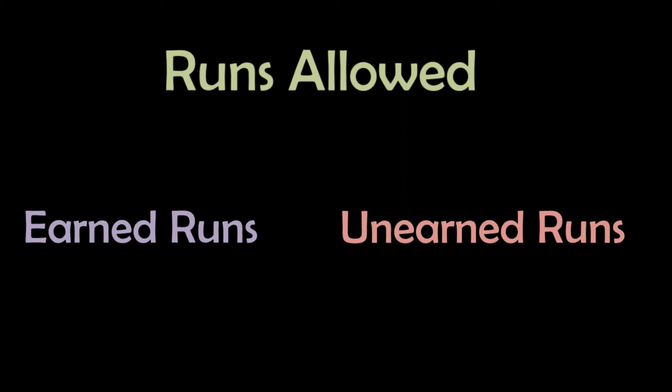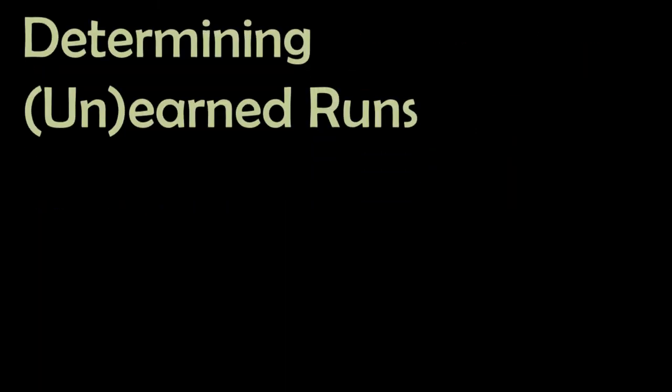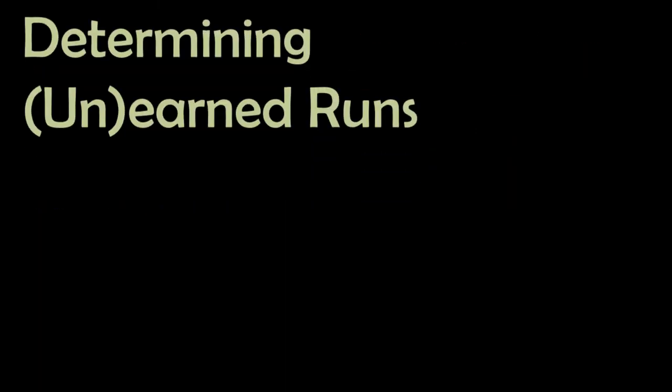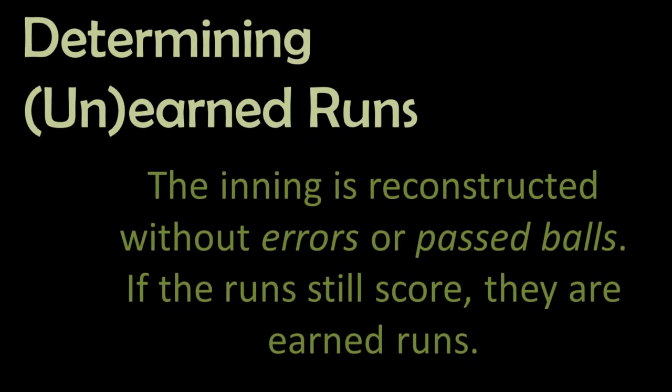If we have an inning in which there are no errors or passed balls, all runs scored in that inning are earned. If there are runs scored in an inning where there was an error or passed ball, however, things get a little bit more complicated. The rulebook states that the official scorer should reconstruct the inning without errors or passed balls. If the runs still score in this reconstructed errorless inning, then the run is earned. But if it does not score, then the run is unearned.